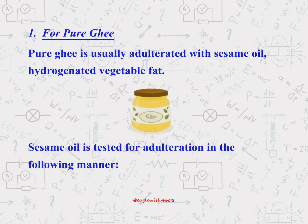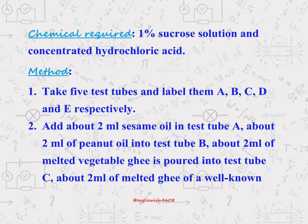Let's start with pure ghee, which is often mixed with sesame oil or hydrogenated vegetable fat. We'll show you the chemical method or procedure which is used to detect the adulterant in ghee.